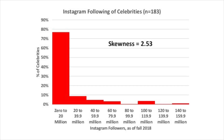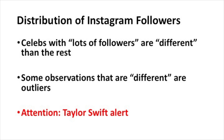The first class in this histogram, which goes between zero and 20 million Instagram followers, actually covers the first quartile, the median, and the third quartile. This means that celebrities with lots of Instagram followers — say those that have 100 million, even 120 to 150 million followers — are somehow different than the rest. And it's possible that some of these observations are in fact outliers.